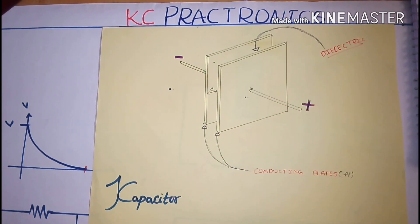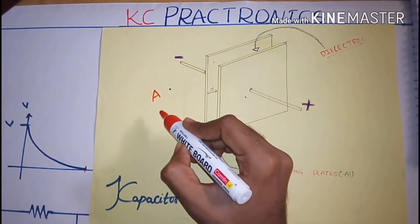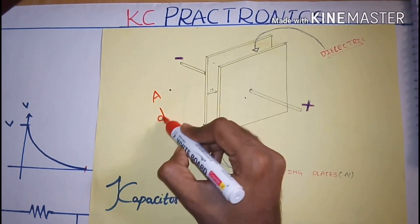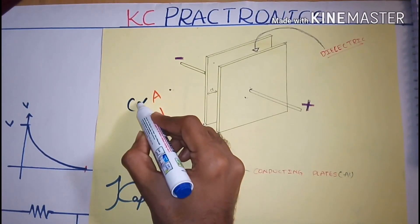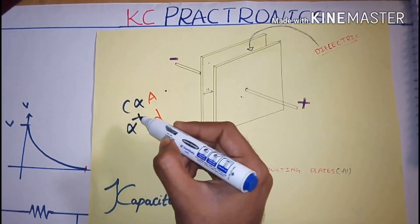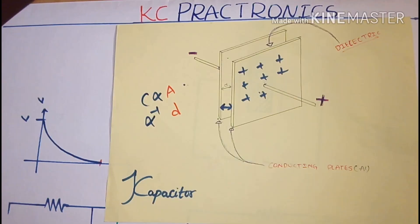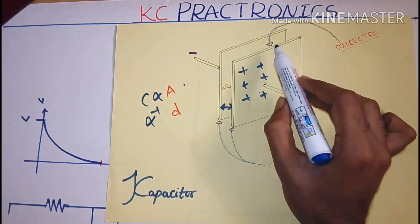To increase the capacitance of the capacitor, that is, the capability to store more amount of charge, we have two techniques: either increase the surface area of the capacitor or decrease the distance between the plates. The capacitance is directly proportional to the surface area and inversely proportional to the distance between the plates. The capacitance also depends upon the type of dielectric introduced between the plates.